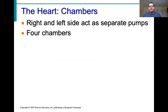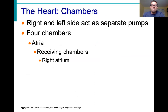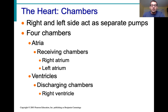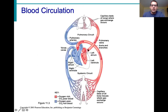Inside the heart there are four chambers. The atria are the receiving chambers at the top — a right atrium and a left atrium. The ventricles are the pumping or discharging chambers — a right ventricle and a left ventricle. The right and left sides act as separate pumps: the right side pumps blood to the lungs and back, the left side pumps blood to the body and back.